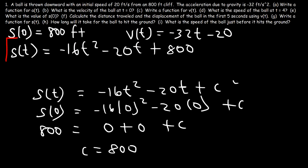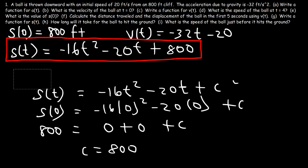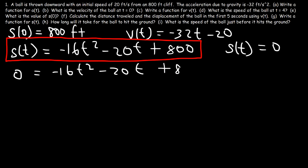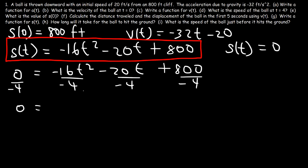Part H: how long will it take for the ball to hit the ground? The ball hits the ground when the position function equals 0, so we set negative 16t squared minus 20t plus 800 equal to 0 and solve for t. We can divide everything by negative 4 to simplify: that gives 4t squared plus 5t minus 200 equals 0, where a is 4, b is 5, and c is negative 200. We'll use the quadratic formula to find t.